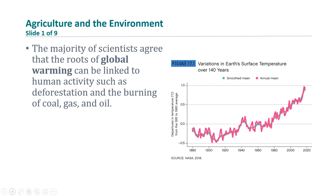Now let's shift to talk about agriculture and the environment. Agriculture is the science or practice of farming, including cultivation of the soil for the growing of crops and rearing of animals who provide food, wool, and other products. Agriculture is impacted by the environment, as certain environments are more conducive to certain aspects of agriculture, and the environment is also impacted by agriculture. One way the environment is negatively impacted by agriculture is through global warming. Global warming refers to the rising atmospheric concentration of carbon dioxide and other greenhouse gases, resulting in higher global average temperatures.